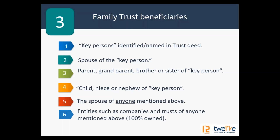Any entity — company or trust — owned by anyone in that family group is also a potential beneficiary. So if a sister or brother has a company running a business that has losses in it, that's very exciting from a tax planning perspective. It's really important to understand who you can pass money around to for tax purposes.